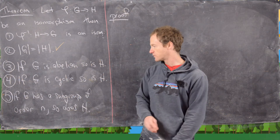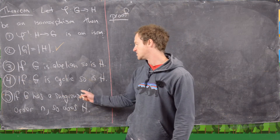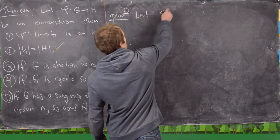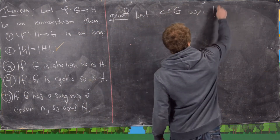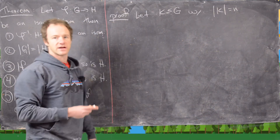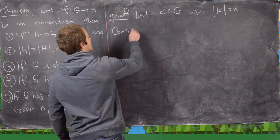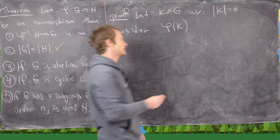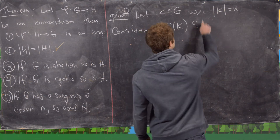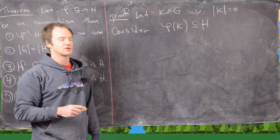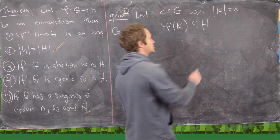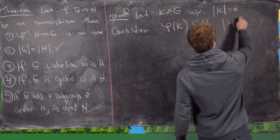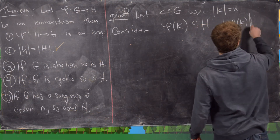Now we prove the subgroup statement. We assume G has a subgroup of order n and want to show H does as well. Let K be a subgroup of G with order of K equal to n. Consider phi(K), the image of this subgroup under our isomorphism — that's a subset of H. Because phi is one-to-one and onto, the number of elements in phi(K) equals n. So it has the right size; we just need to show phi(K) is actually a subgroup, not merely a subset.